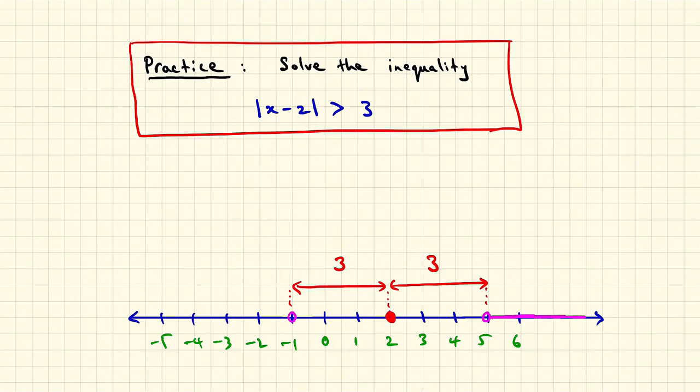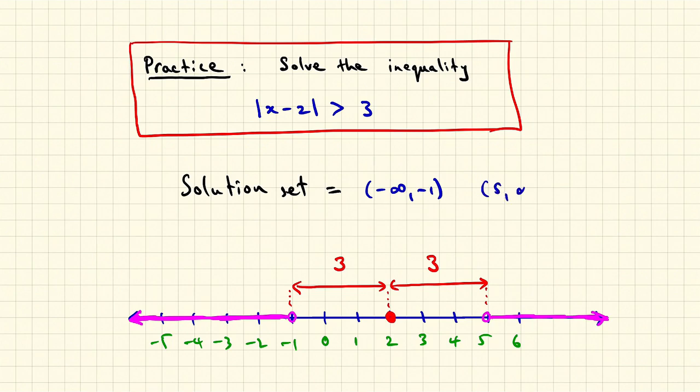Now we want the distance to two to be more than three, so we'll move further away from two, either to the right or to the left. And then we can read off the solution set. It's just a union of two intervals. One interval extends indefinitely to the left from minus one, but not including minus one. And the other interval extends indefinitely to the right from five, but not including five. And we put those two intervals together with a union symbol.